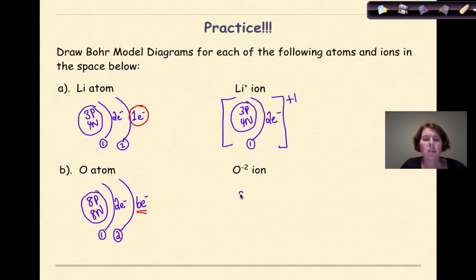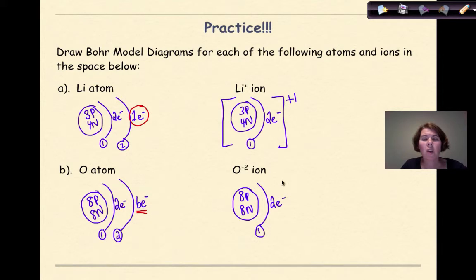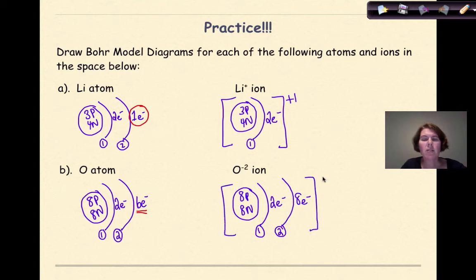For the oxygen ion: still 8 protons and 8 neutrons, 2 electrons in the first shell, and now 8 electrons in the second shell — because the ion has an overall charge of minus 2, meaning more electrons than protons. With brackets and a charge of −2, I've actually increased my valence electrons to 8, because the original valence shell is still there and I've added to it.